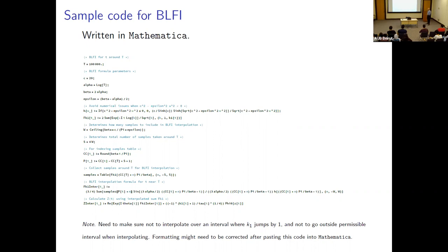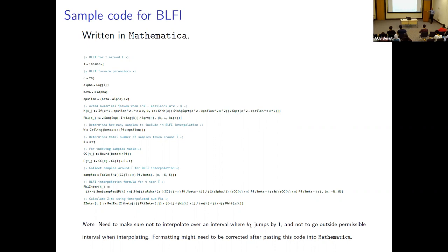You have to be careful: the interpolation formula assumes you're sampling the same exponential sum at all points. If you pass a point where the main sum length K₁ jumps by one, you'd be sampling a different function, and the interpolation won't recover the correct value. The exponential sum itself must remain the same across all sample points.